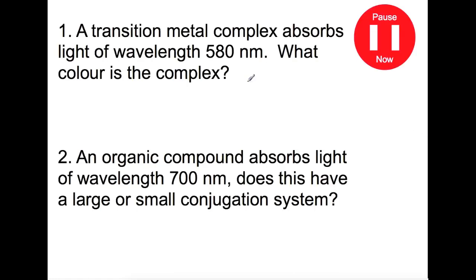Pause the video now and try these two questions to do with color. For question one, you need to have a look at page 20 in the data book. You need to identify the color of wavelength 580 nm, which we'll see is at the border of yellow-green and yellow. If a transition metal complex absorbs 580 nm, then it will transmit the opposite color. So this means that this complex will be a violet-blue color.